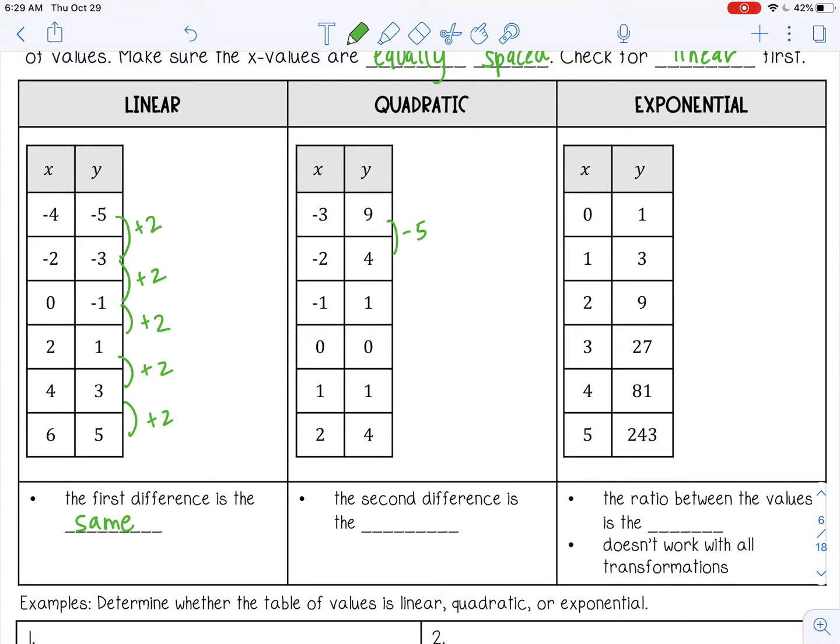And then from 4 to 1, that's minus 3. From 1 to 0, that's minus 1. From 0 back up to 1, that's plus 1. And then from 1 to 4, that's plus 3. Okay, so that's definitely not linear because they're not all the same.